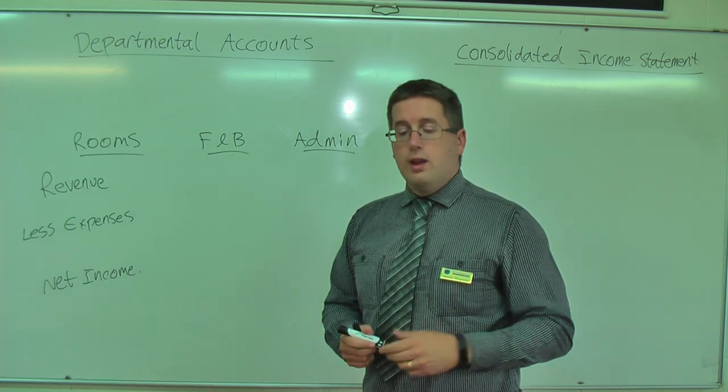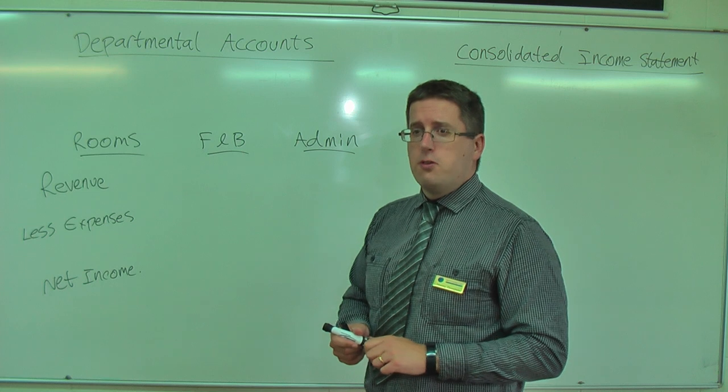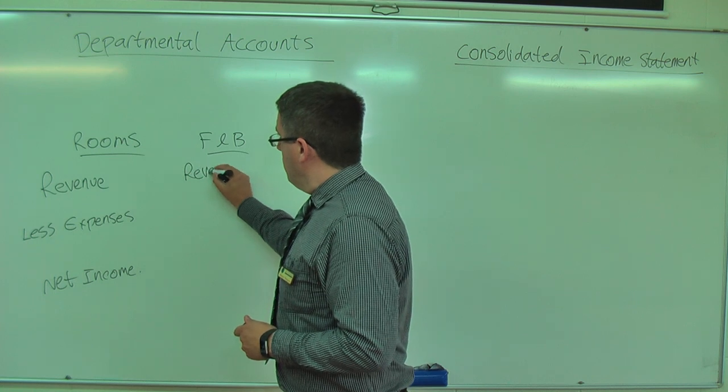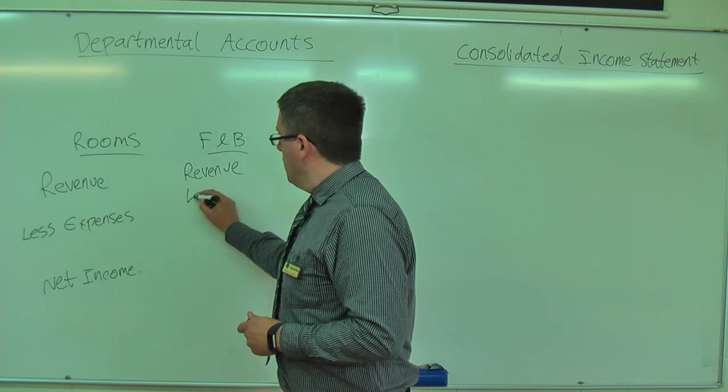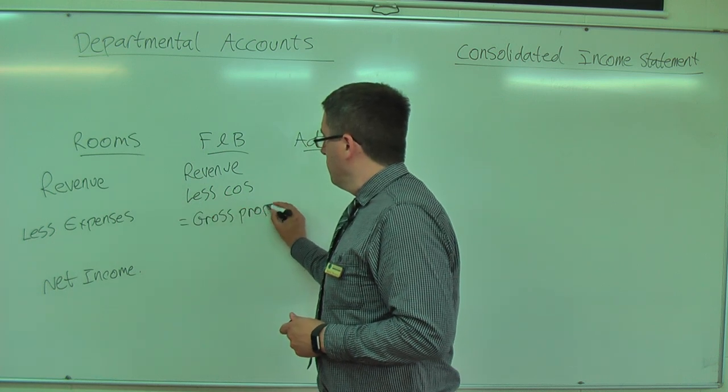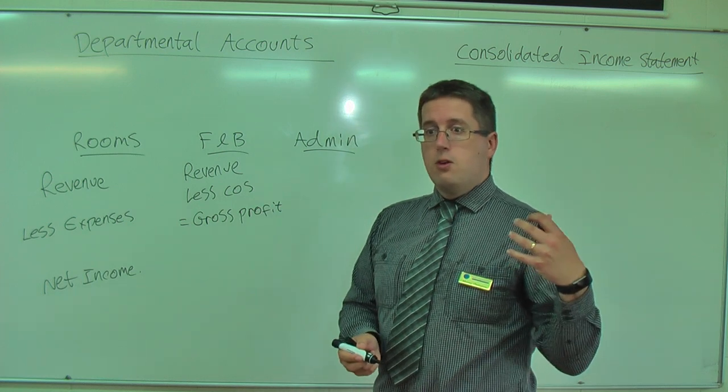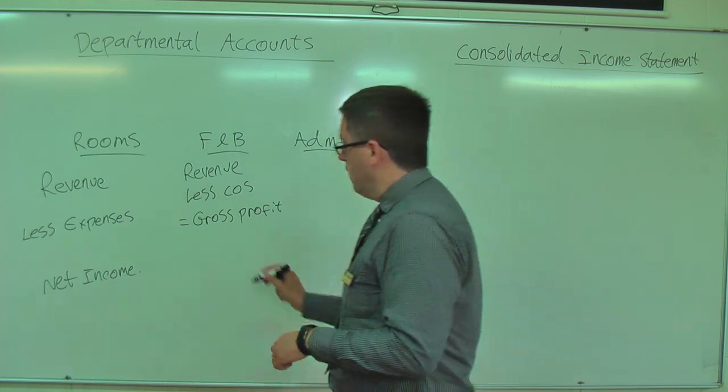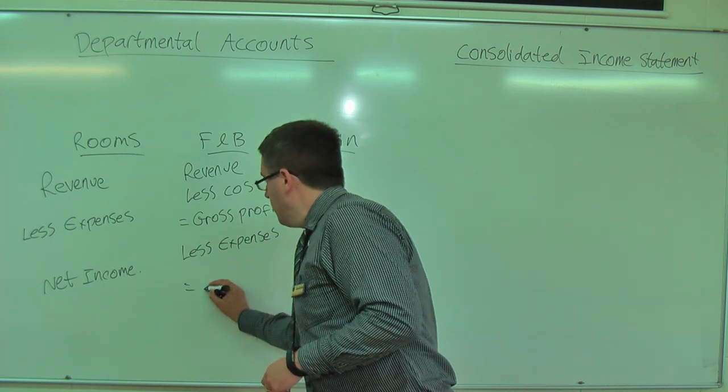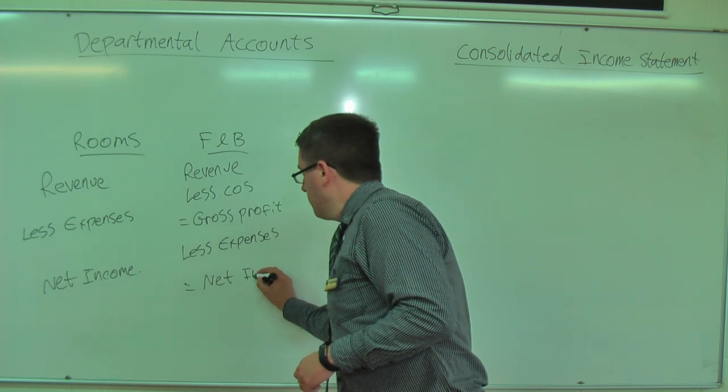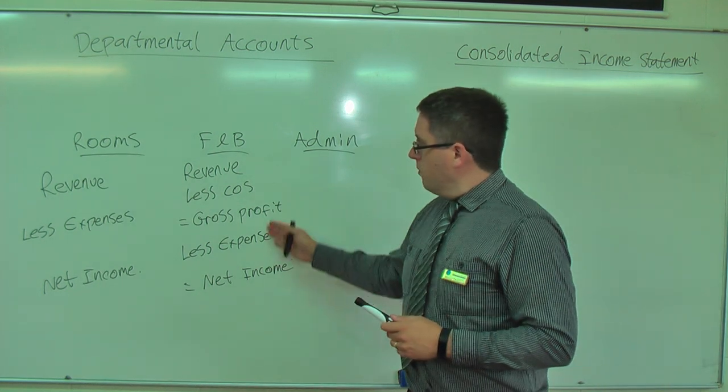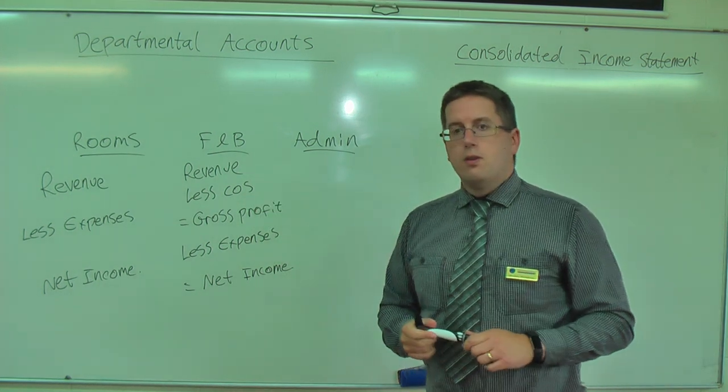The food and beverage - there's just one extra step. I've got cost of sales or cost of goods sold. So we have our revenue, this is our cost of sales, equals our gross profit. Gross profit is the profit made from selling items. And then we take away our other expenses, and then that gives us our net income or the net performance of that department. So there's just that extra step there for the food and beverage department.